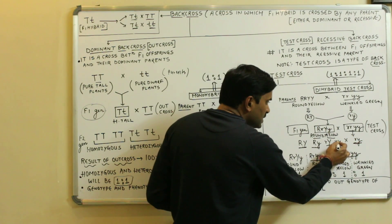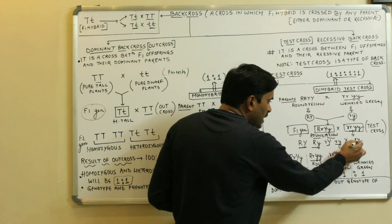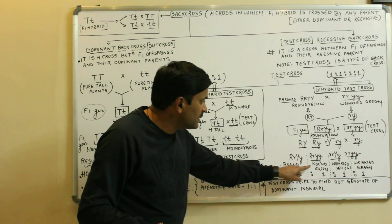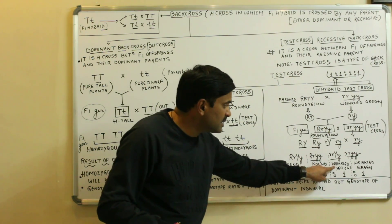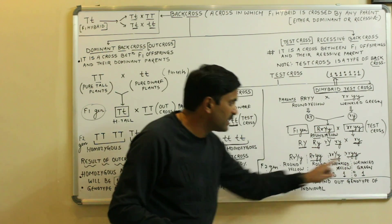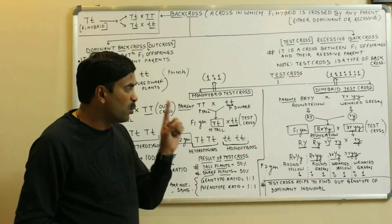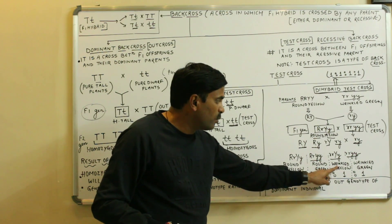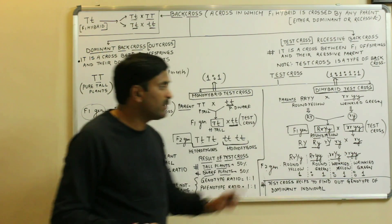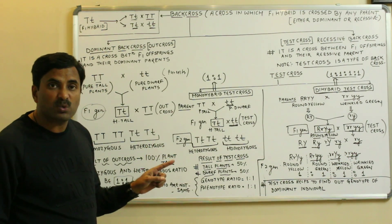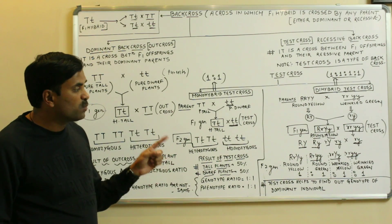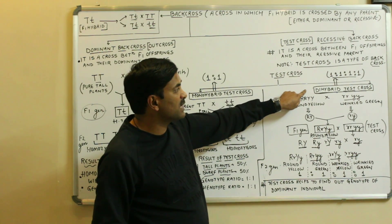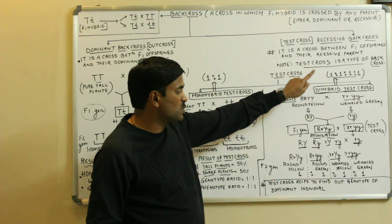Crossing the F1 gametes with the recessive parent gamete (small r small y) gives four combinations in F2: small r capital R capital Y small y (round yellow), small r capital R small y small y (round green), small r small r capital Y small y (wrinkled yellow), and small r small r small y small y (wrinkled green). So we get one round yellow, one round green, one wrinkled yellow, and one wrinkled green. The ratio of the dihybrid test cross is 1:1:1:1.